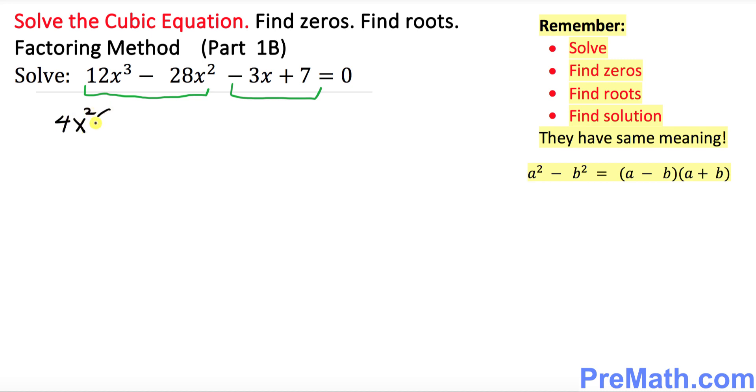Once it is in common, you bring it outside. And what's going to be inside parentheses? That's going to be 3x minus 7. Likewise, you see in the second pair, do you see anything in common? There's nothing in common.